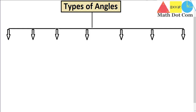Hello everyone. Today I'm going to tell you the different types of angles based on measurement and clear your confusion regarding what are the main types of angles. Angles are basically classified differently based on different properties — today I'll cover types based on measurement. Sometimes they are classified on the basis of rotation, and sometimes in the form of pairs of angles.